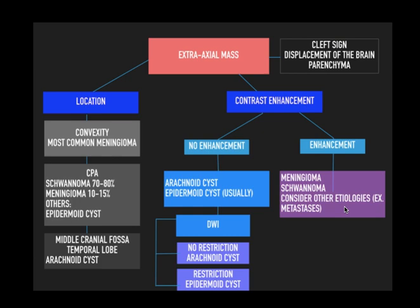This is a simplified approach from an electronic poster by the European Society of Radiology. Once you think about an extra-axial lesion, always look at the location. If it is the convexity, the most common is meningioma. If it is the CP angle, think schwannoma or meningioma, and others like epidermoid cyst — which has a dirty appearance on FLAIR, a characteristic feature. In the middle cranial fossa and temporal convexities, always think of arachnoid cyst. Based on contrast enhancement, if there is enhancement, it could be meningioma, schwannoma, or metastasis — these three are most common.